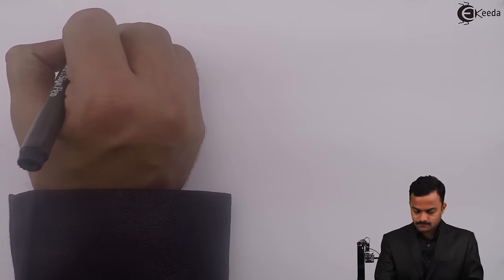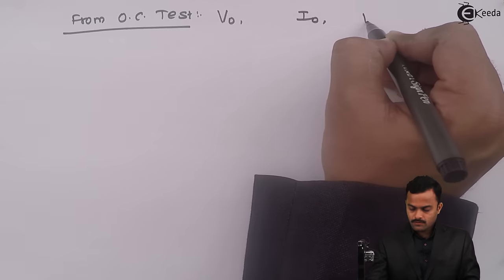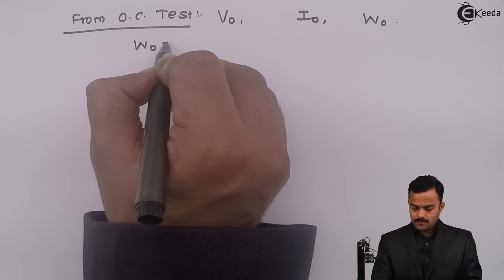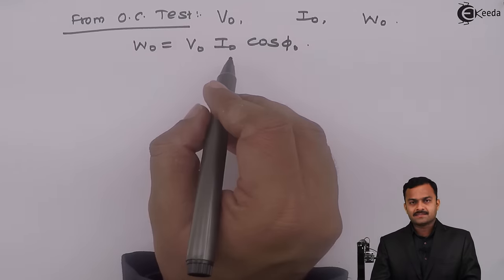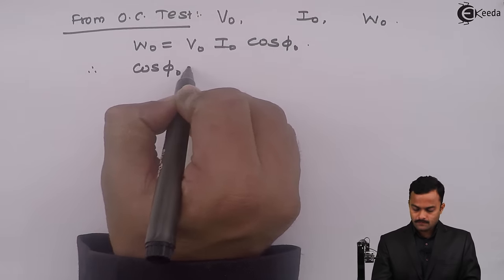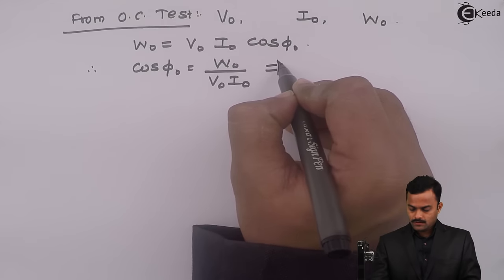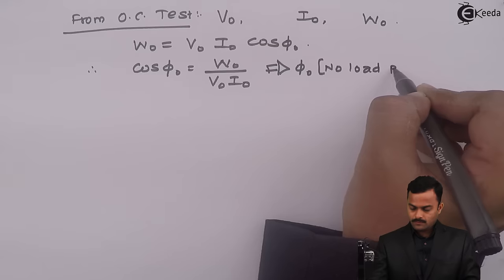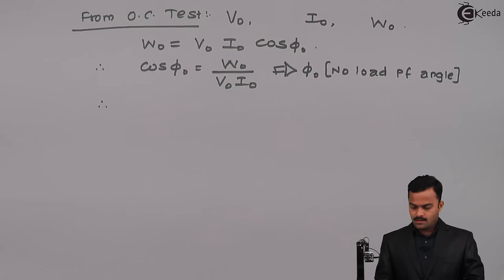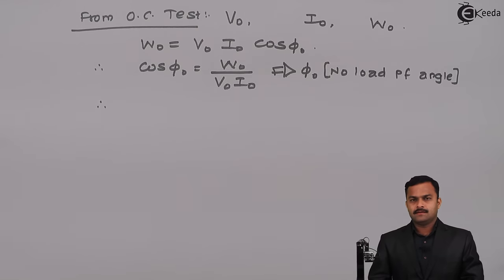From the OC test we obtained V0, I0, and W0. Since W0 equals V0 times I0 times cos φ0, from this we can get cos φ0, the no-load power factor angle φ0. Now, what is the need of this? I will explain with the help of a simple circuit and a phasor diagram.